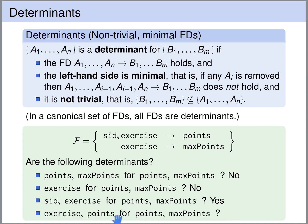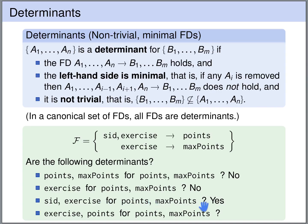Finally, do {points, exercise number} together form a determinant for {points, max_points}? The exercise number uniquely determines the maximum number of points, and points uniquely determines points. So this is indeed a valid functional dependency. Is it minimal? If we drop exercise, the maximum number of points are no longer uniquely determined. If we drop points, the points are no longer uniquely determined. So it is minimal. It is also not trivial, because the right-hand side is not a subset of the left-hand side. So this is a determinant.